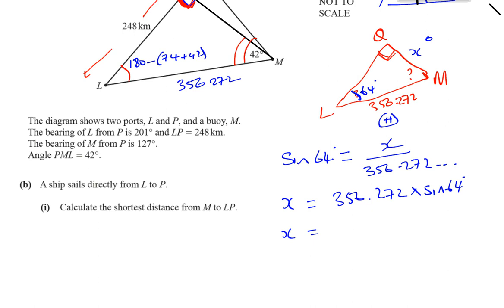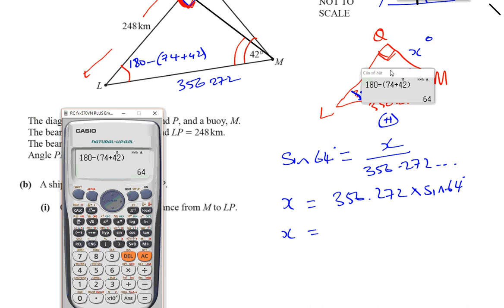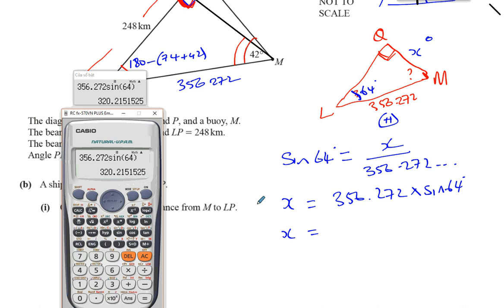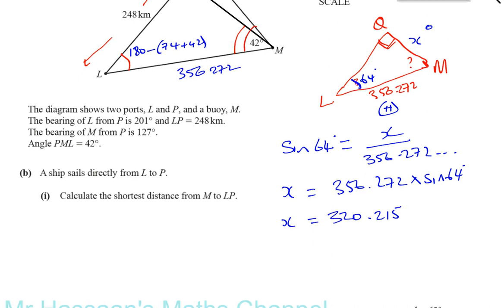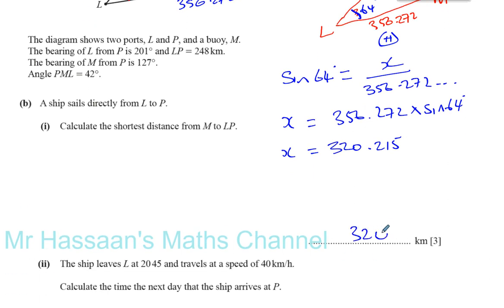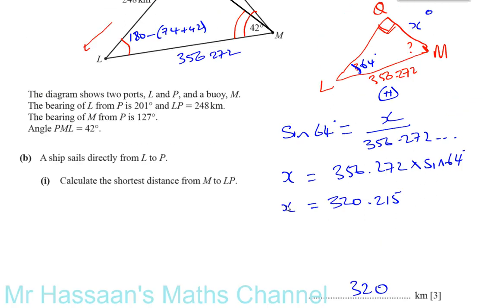And I can calculate it. So you have 356.272 times the sine of 64. That gives you 320.215, which to 3 significant figures is going to be 320 kilometers. So that's part B done.